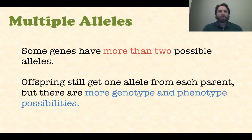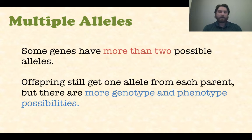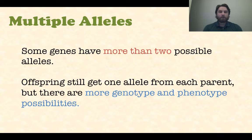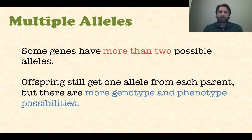The next thing we're going to look at is multiple alleles. Some genes have more than two possible alleles — not just a dominant and a recessive. Sometimes there are three, four, or five different alleles to choose from. The offspring still only get one allele from each parent, but that opens up many more genotypes and phenotypes that could possibly occur.